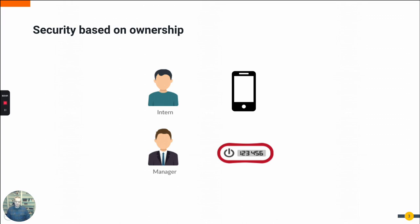Additionally, ownership inherently means that ownership can be taken or lost. Where other factors may not have similar issues, a physical key can be taken without someone knowing it was taken, or used if it was misplaced somewhere. In simplest terms, the physical device brings in the limitations of having something physical in a digital world.